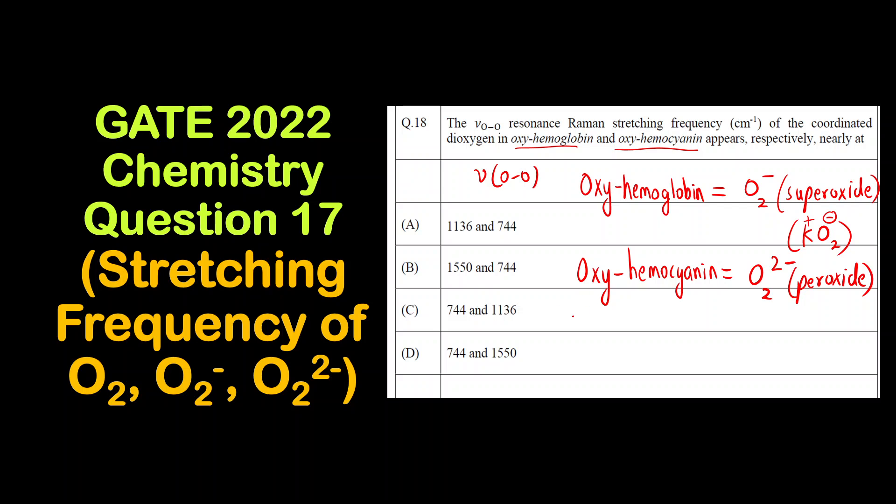You have to remember the values. Oxygen bond order is 2. The stretching frequency depends on the bond order; it is directly proportional to the bond order.